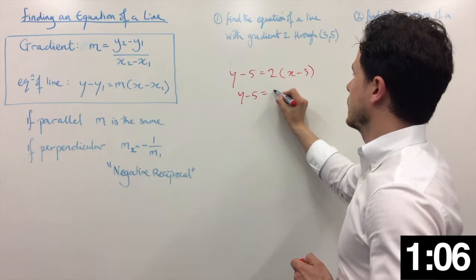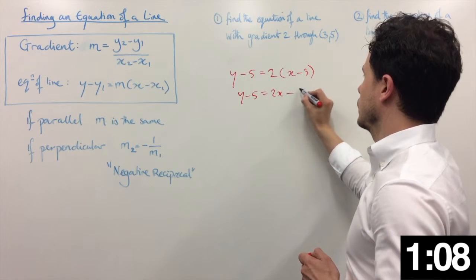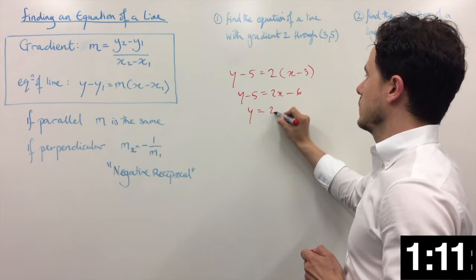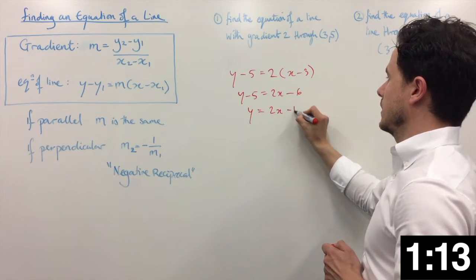So y minus 5 equals 2x minus 6. Make sure you multiply across there. Then tidying up: 2x, we add 5 onto there and we get y equals 2x minus 1.